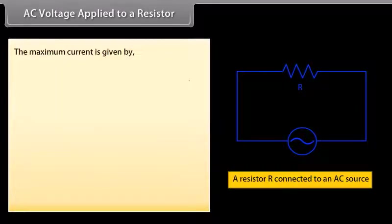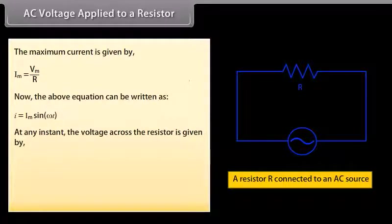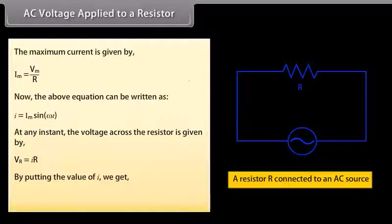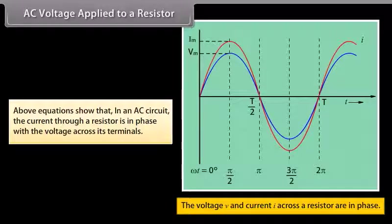We apply Kirchhoff's rule in the loop to get I = (Vm/R) × sin(ωt). The maximum current is given by Vm/R. The above equation can be written as I = Im sin(ωt). At any instant, the voltage across the resistor is given by Vr = Vm sin(ωt). This shows that in an AC circuit, the current through a resistor is in phase with the voltage across its terminals.